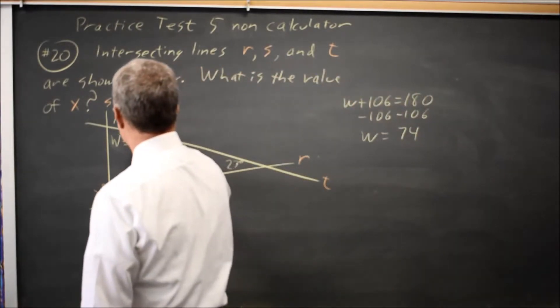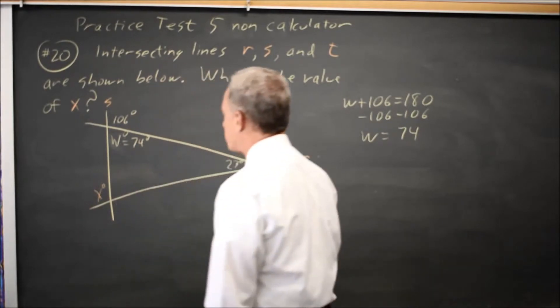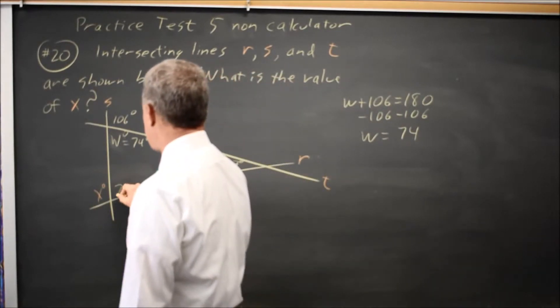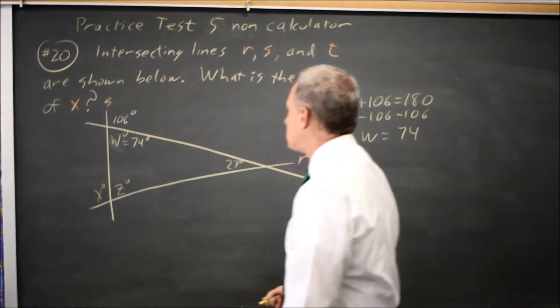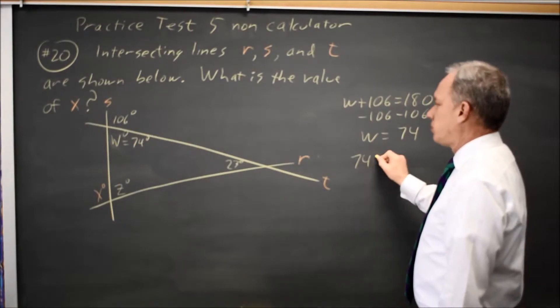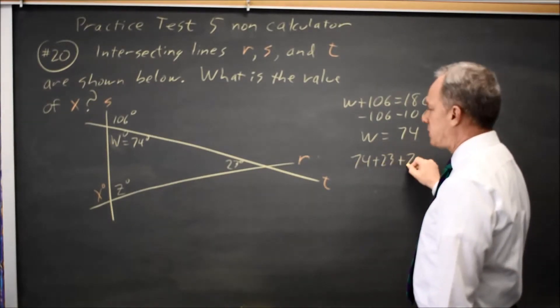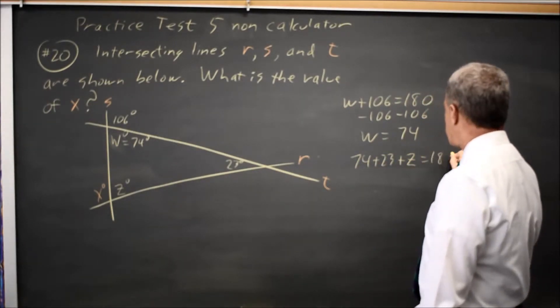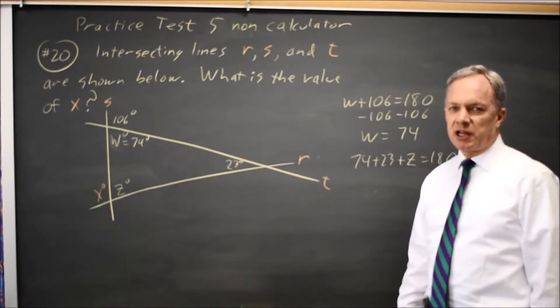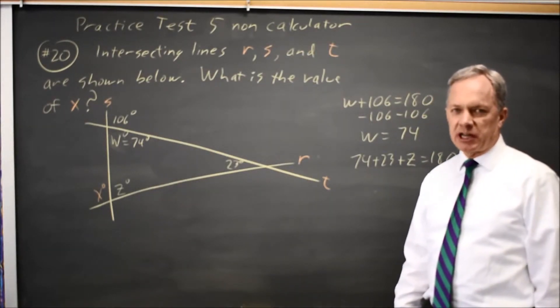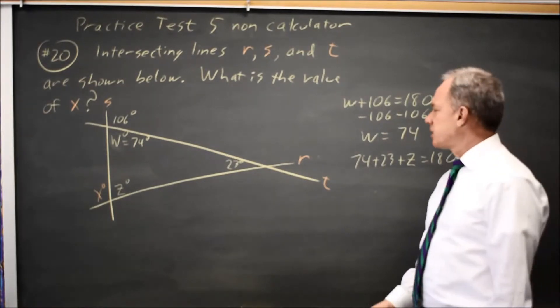This is 74 plus 23, and let's call this angle Z. 74 plus 23 plus Z equals 180 because these three angles form a triangle, and the angles of a triangle add up to 180 degrees. You'll often need that on the SAT.